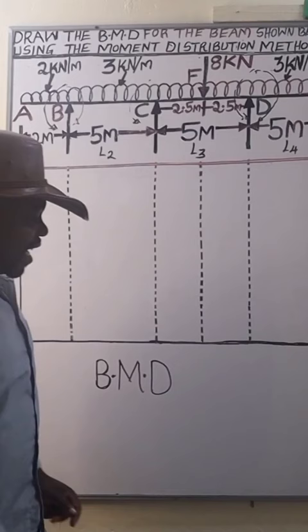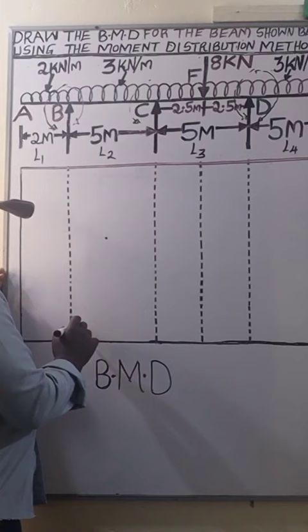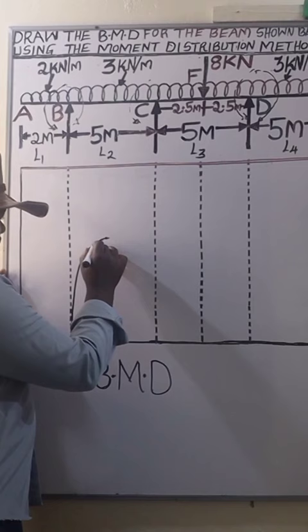Let's begin with the maximum bending moment between span B and C that is 9.38. So 9.38 is that point and it's going to be a smooth curve since the span is loaded with a UDL. So we get a smooth curve.